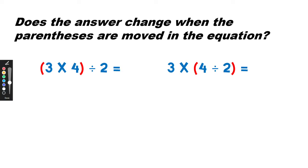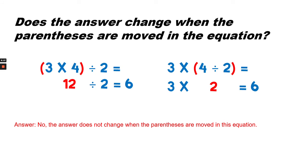On the right-hand side, we would start by dividing 4 divided by 2. How many times does 2 go into 4? 2, 4. 2 goes into 4 2 times. So 4 divided by 2 is 2. And 3 times 2 equals 6. So in this example, does the answer change when the parentheses are moved in the equation? No, the answer does not change when the parentheses are moved in this equation.